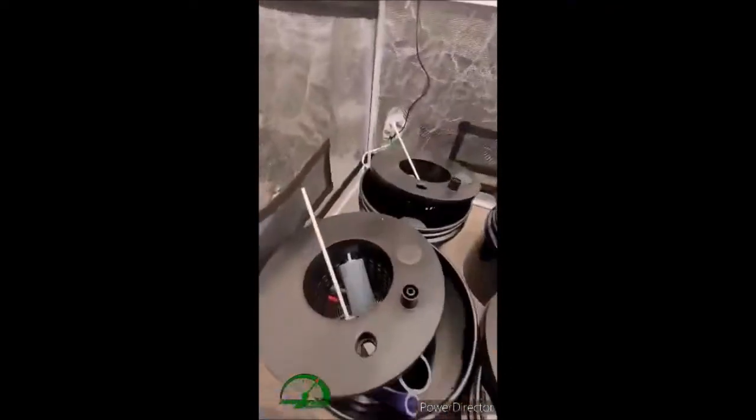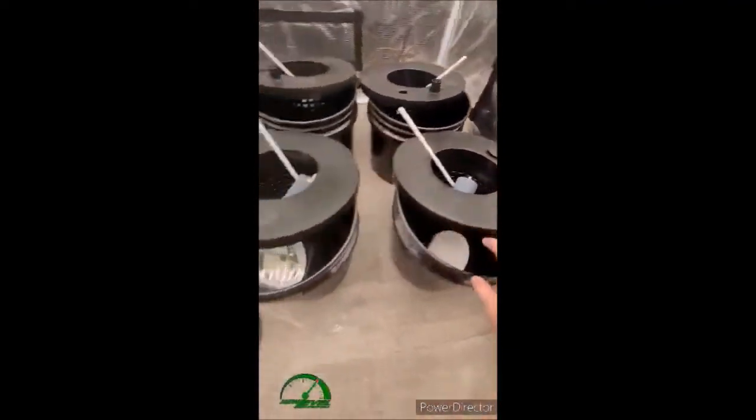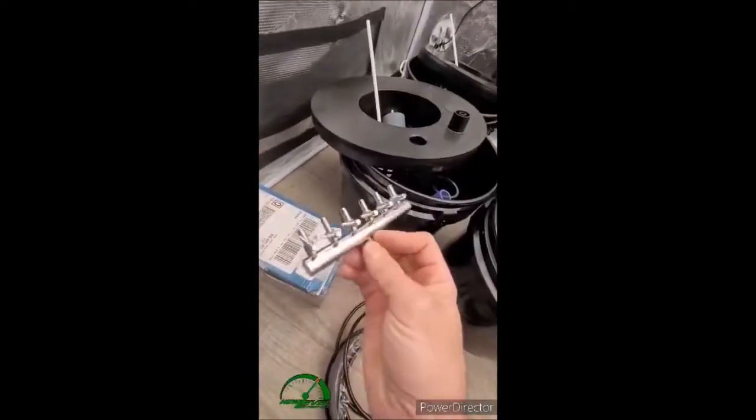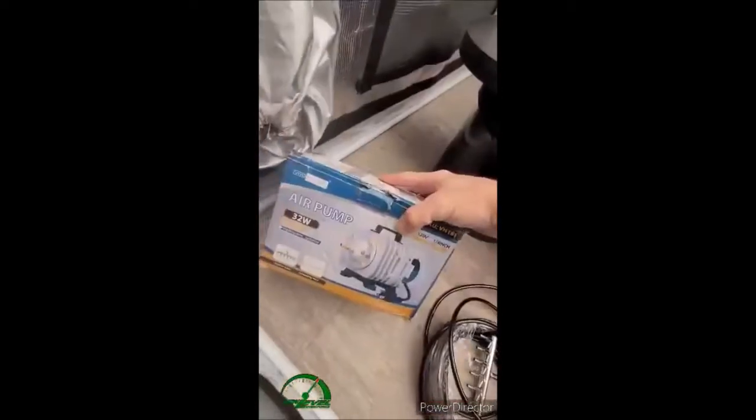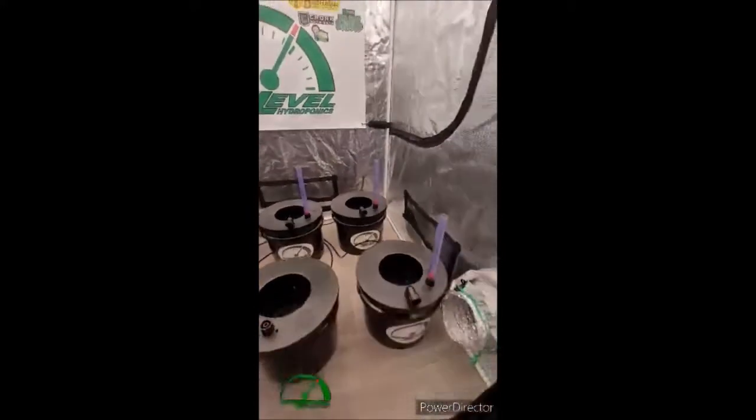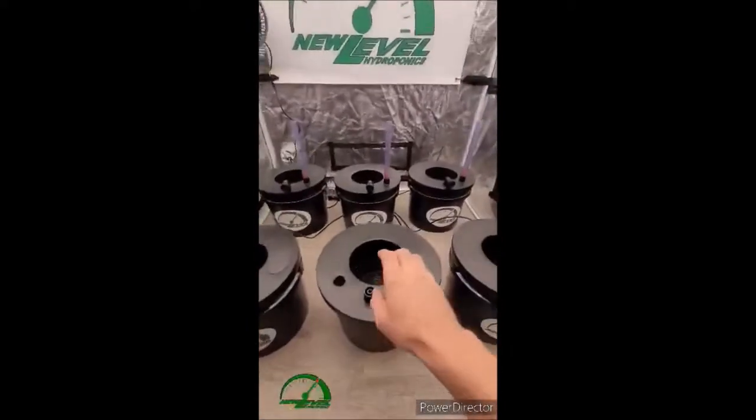Inside each one of these buckets from New Level, we have everything that we need to get the grow going. A whole bundle of airline, we have our splitter that will support all six buckets, and of course we have the air pump. So I left one bucket and I'm going to show you how the lid goes together.